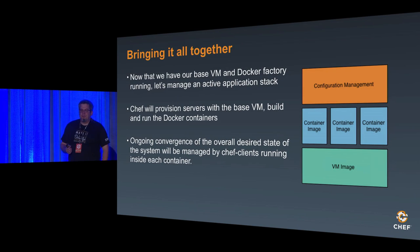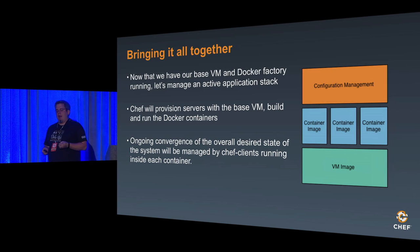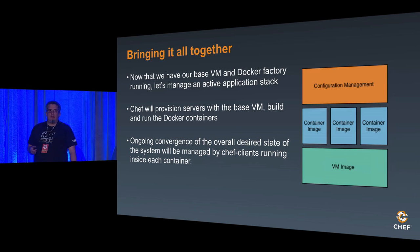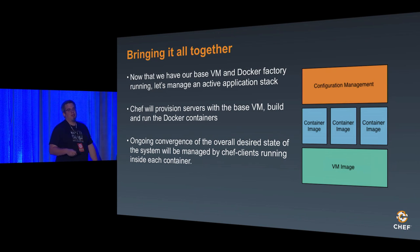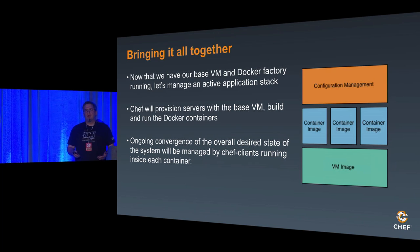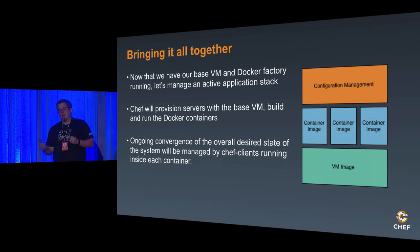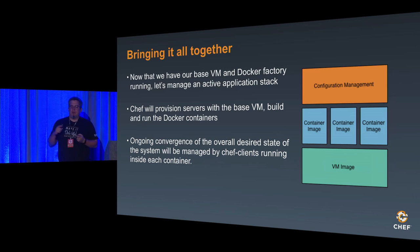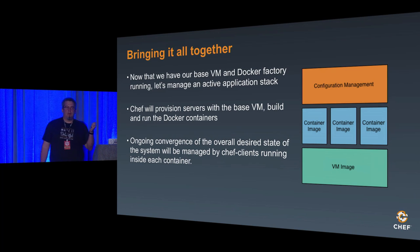Let's bring it all together. We've got our base VM and our Docker factory running — let's manage an active application stack. We'll use Chef to provision the whole thing. We'll do the typical bootstrapping process using Amazon — provision the servers, build and run the Docker containers, and then manage overall convergence, which I'll show live.